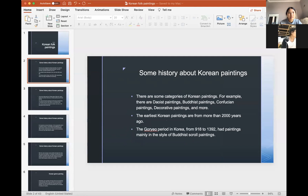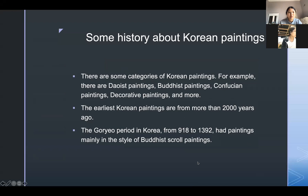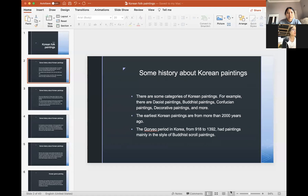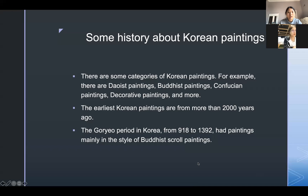I want to share some history about Korean paintings. There are some categories of Korean paintings. For example, there are Taoist paintings, Buddhist paintings, Confucian paintings, decorative paintings, and more. The earliest Korean paintings are from more than 2000 years ago.